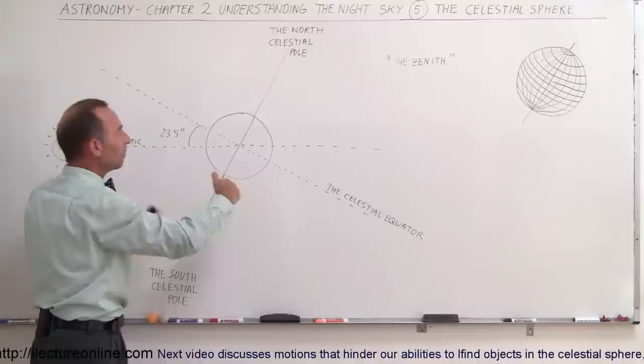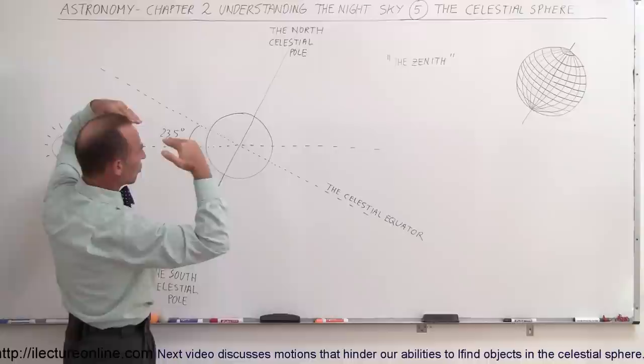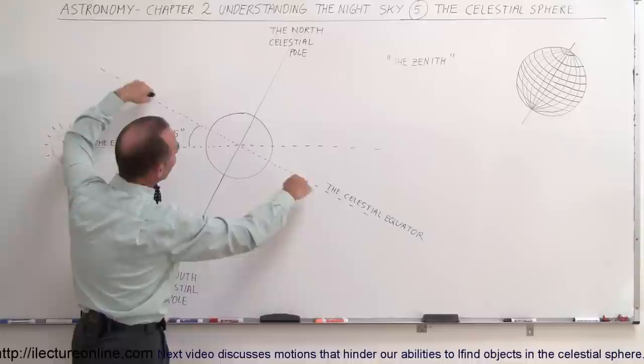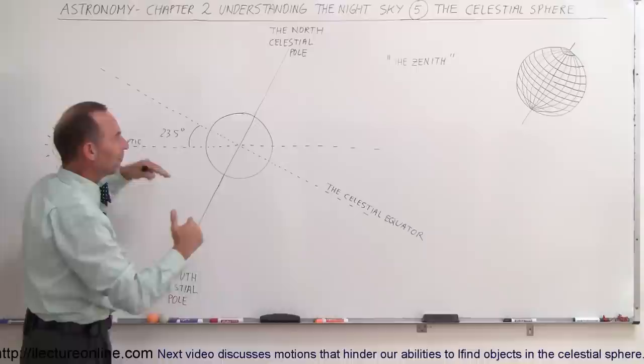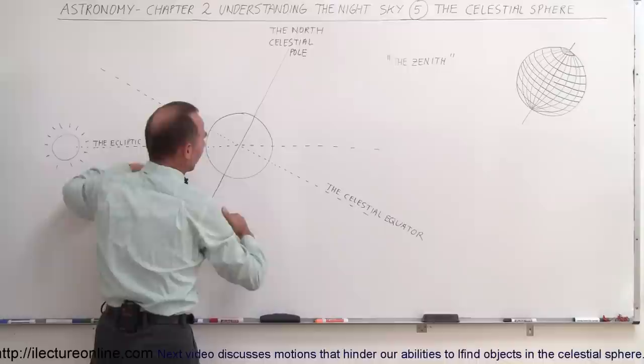If we imagine that we slice the Earth at the equator, and then take that slice and move it out in all directions — forward, backward, sideways — we get an enormously large, infinitely large plane that becomes the celestial equator, or the celestial equator plane. Everything to the north of it is north of the equator, everything to the south is south of the equator. It basically divides the universe into two regions.